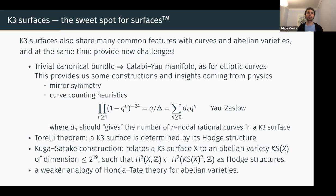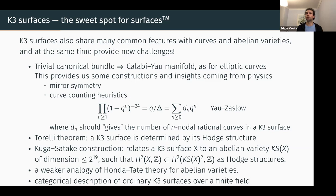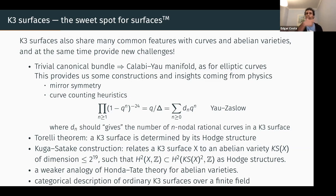Very recently, we have a categorical description of ordinary K3 surfaces over a finite field, meaning a description in terms of linear algebra data over Witt vectors. This is very similar to what Deligne did for ordinary abelian varieties over a finite field. So if you want to understand K3 surfaces up to isomorphism, you can go through this linear algebra approach and be able to construct them. However, at the end of the day it's very hard to make equations back — that's also the case for abelian varieties.